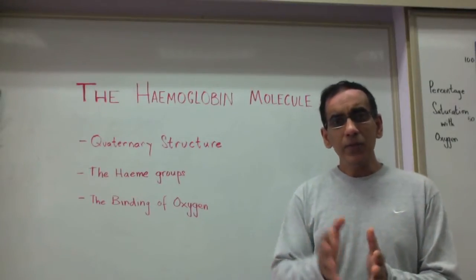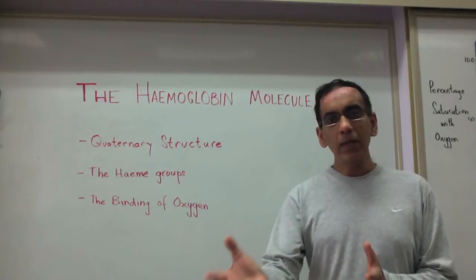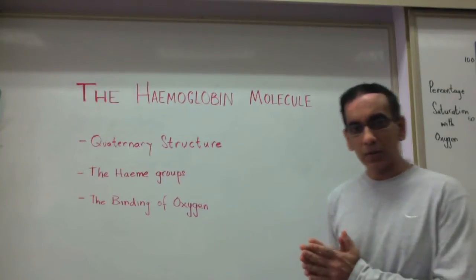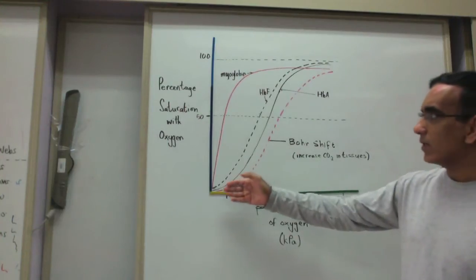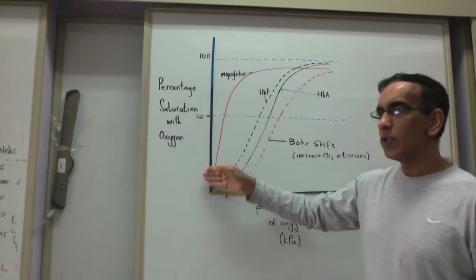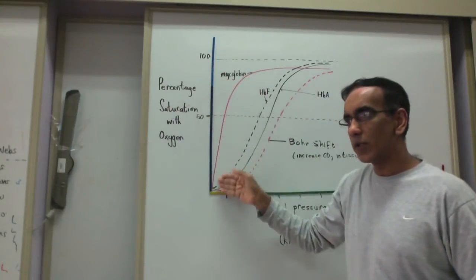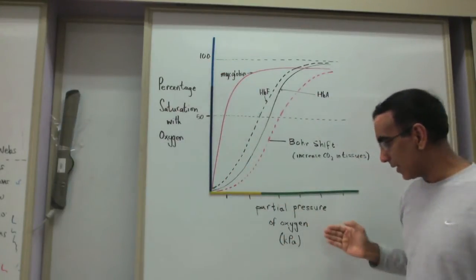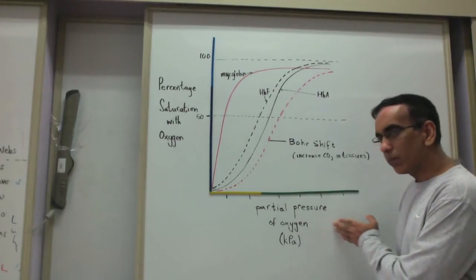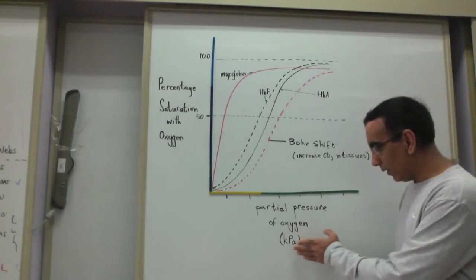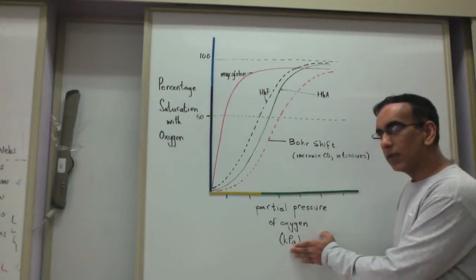Now that we've got the model of hemoglobin's quaternary structure, let's relate that structure to how hemoglobin binds to oxygen. Here on this axis, we can see percentage saturation of hemoglobin with oxygen. And here on this axis, we can see the partial pressure of oxygen given in the units of pressure kilopascals.